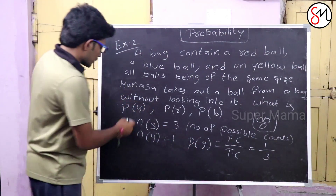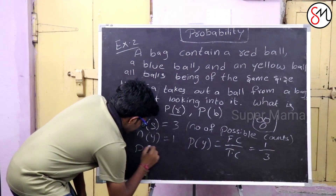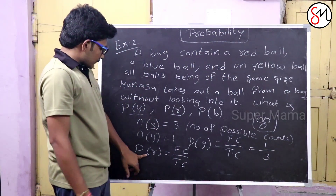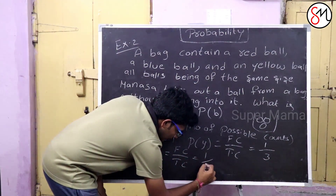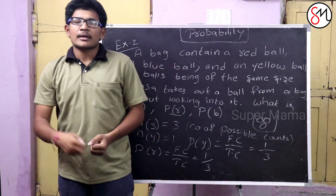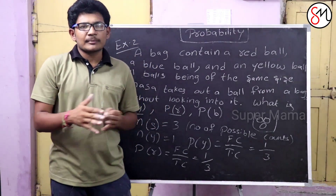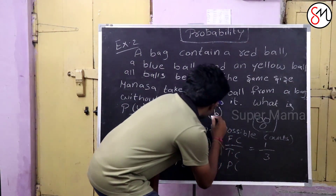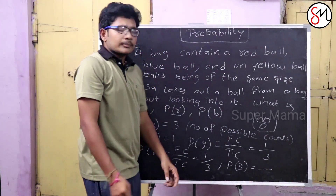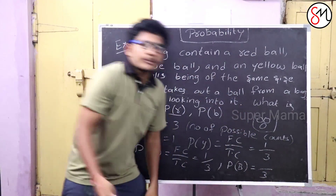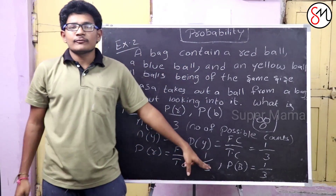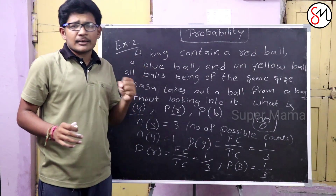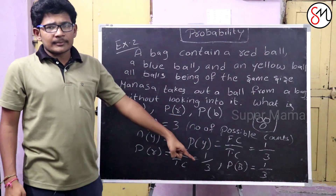The probability of Y and probability of R are equal. Probability of R: favorable count by total count. Red balls are only one, total balls are 3, so it is also 1 by 3. Probability of blue ball: blue balls are only one, total is 3. So the probability of B is equal to 1 by 3.